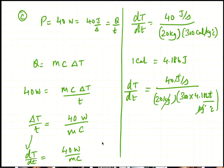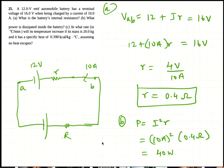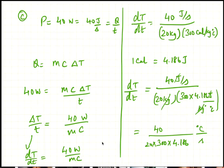What we get is 40 divided by 20 into 300 into 4.186 degrees Celsius per second. That's the rise in temperature. But they want the answer in degrees per minute, so let's add another page.